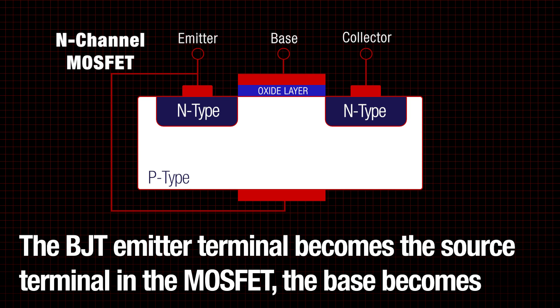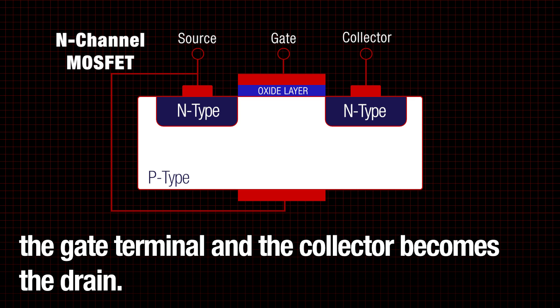For terminology, the BJT emitter terminal becomes the source terminal in the MOSFET, the base becomes the gate terminal, and the collector becomes the drain.